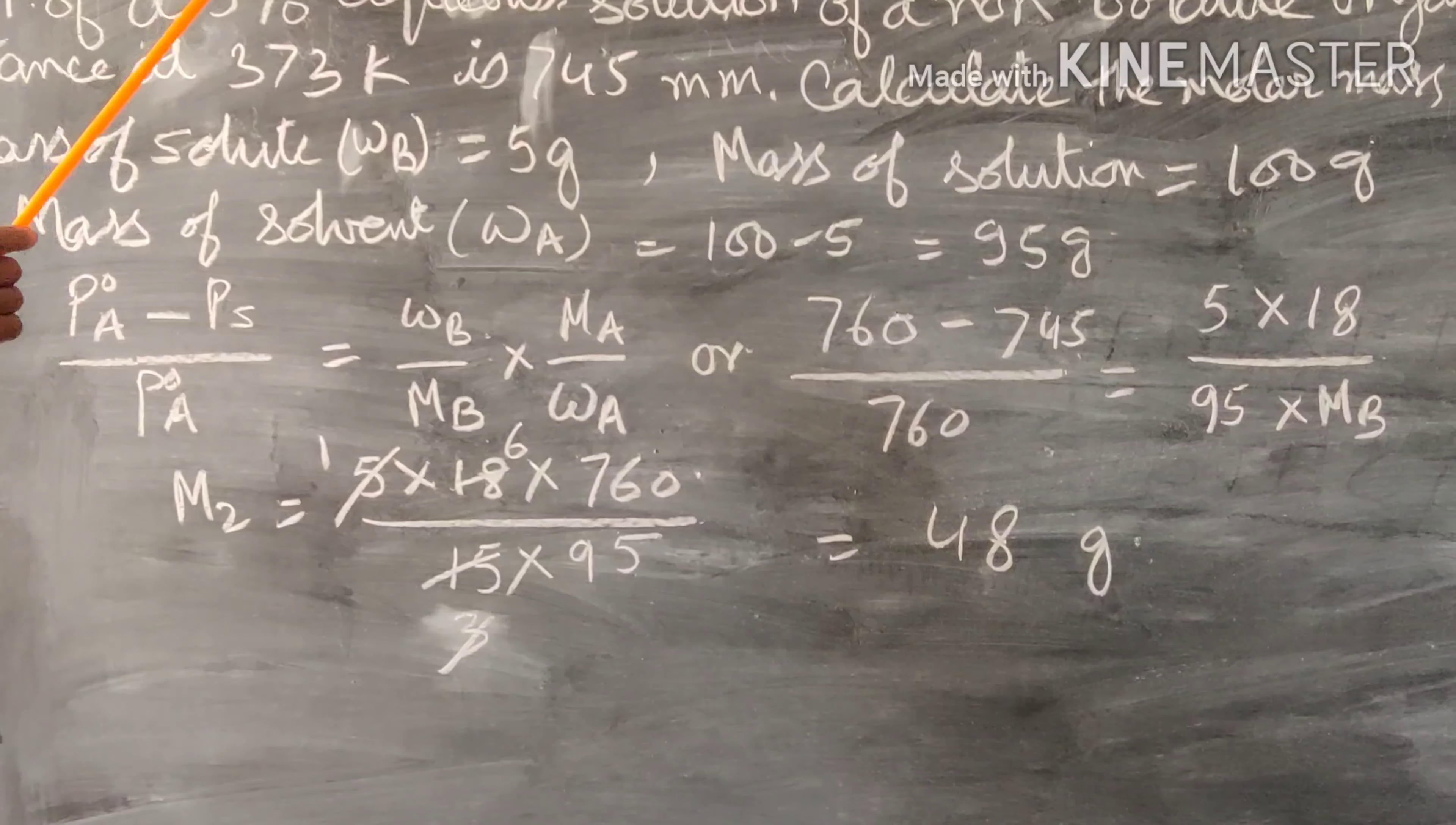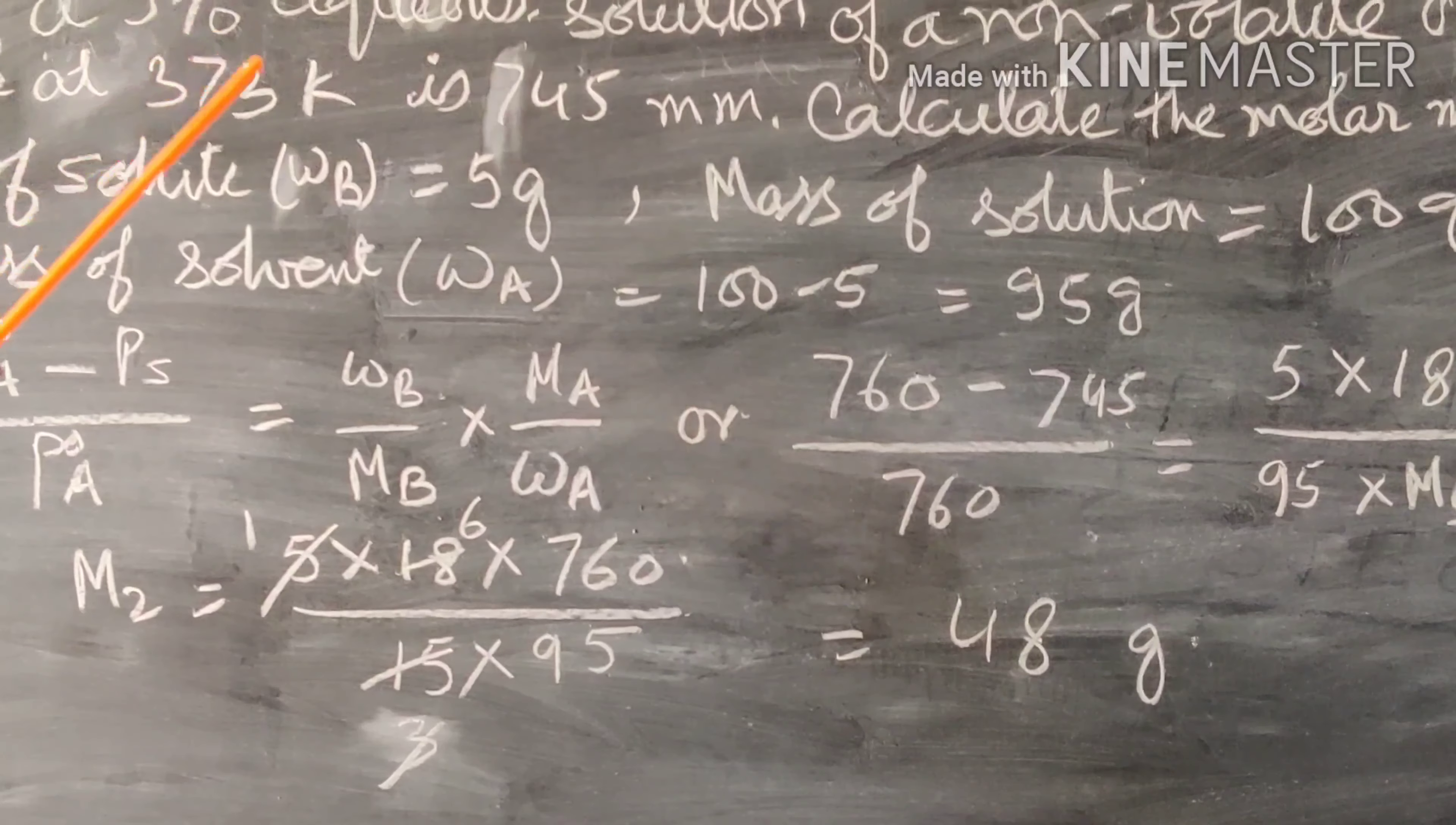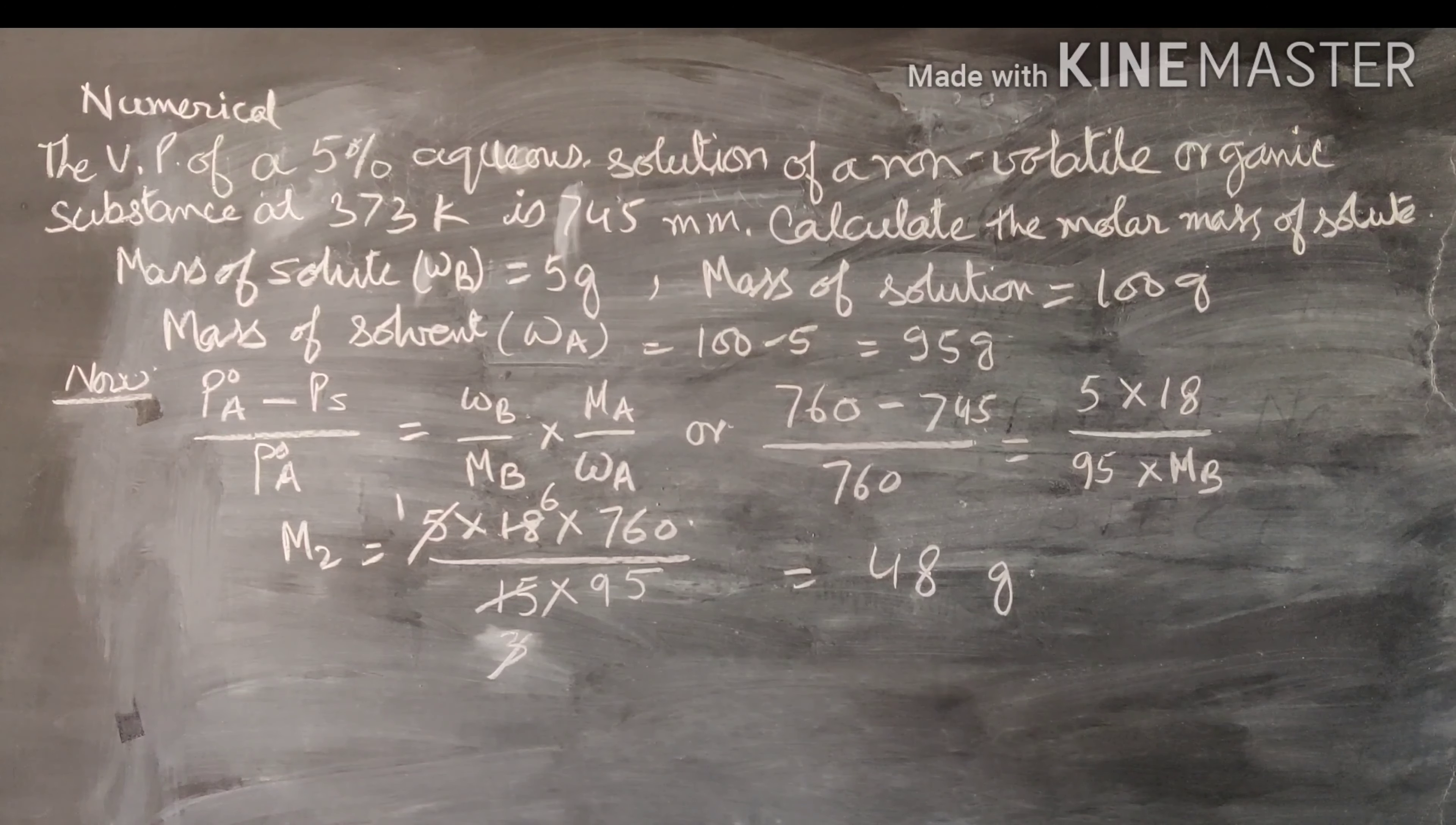It contains 5 grams of solute in 100 grams of solution. When you subtract the mass of the solute from the solution, you get the mass of the solvent.